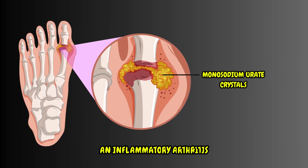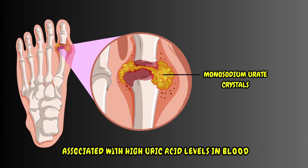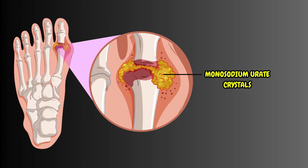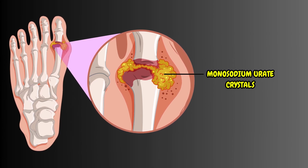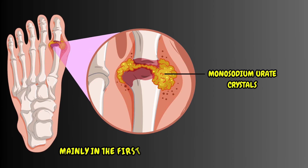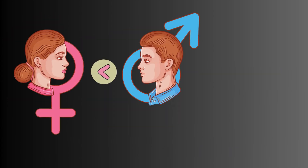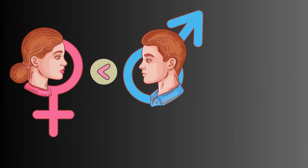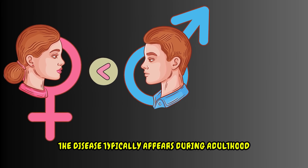Gout is an inflammatory arthritis associated with high uric acid levels in blood and consequent deposition of intraarticular monosodium urate crystals, mainly in the first metatarsophalangeal joint. Males are more frequently affected than females, and the disease typically appears during adulthood.